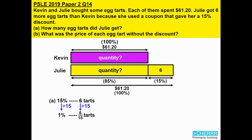We do not need to solve for 1% just yet. We leave it alone first, because what we are interested in is to solve for 100% for Julie. So from 1%, to find 100%, we multiply by 100. So 6/15 multiplied by 100 gives us 40 tarts.